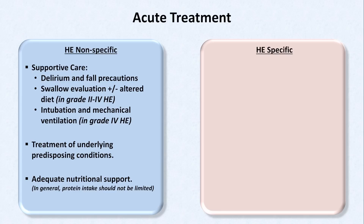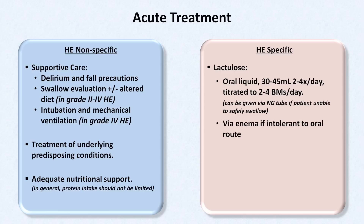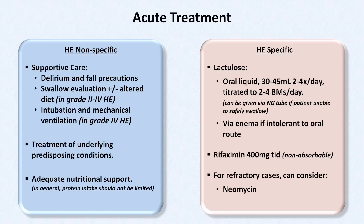Moving on to treatment options specific for hepatic encephalopathy, by far the most commonly used is lactulose, administered as an oral liquid, usually in either a 30 or 45 milliliter dose given two to four times per day, titrated to maintain two to four bowel movements per day. In patients who cannot safely swallow, it should be given via nasogastric tube or alternatively via enema. Another option is the non-absorbable antibiotic rifaximin, which presumably kills off urease-producing bacteria in the gut, reducing ammonia production. Anecdotally, rifaximin takes much longer to work than lactulose and is probably better for long-term chronic maintenance rather than treatment of acute exacerbations. This is also true for third-line agents, neomycin and branched-chain amino acids.